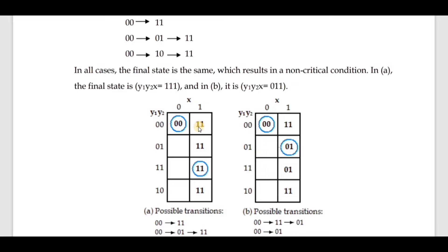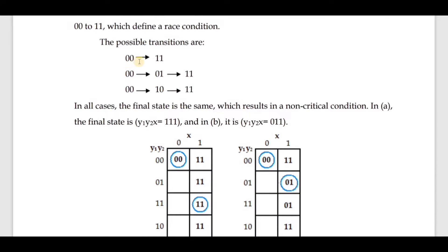The 11 represents capital Y1 Y2. For the next step it becomes small y1 and y2. With small y1, y2 and x equal to one, the circuit reaches the stable state 11. So from 00 it goes to 11 in one transition due to the change in the value of x.